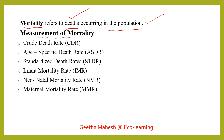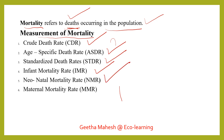In the measurements of mortality, we have six types. First of all: crude death rate, age-specific death rate, standardized death rate, infant mortality rate, neonatal mortality rate, and maternal mortality rate.